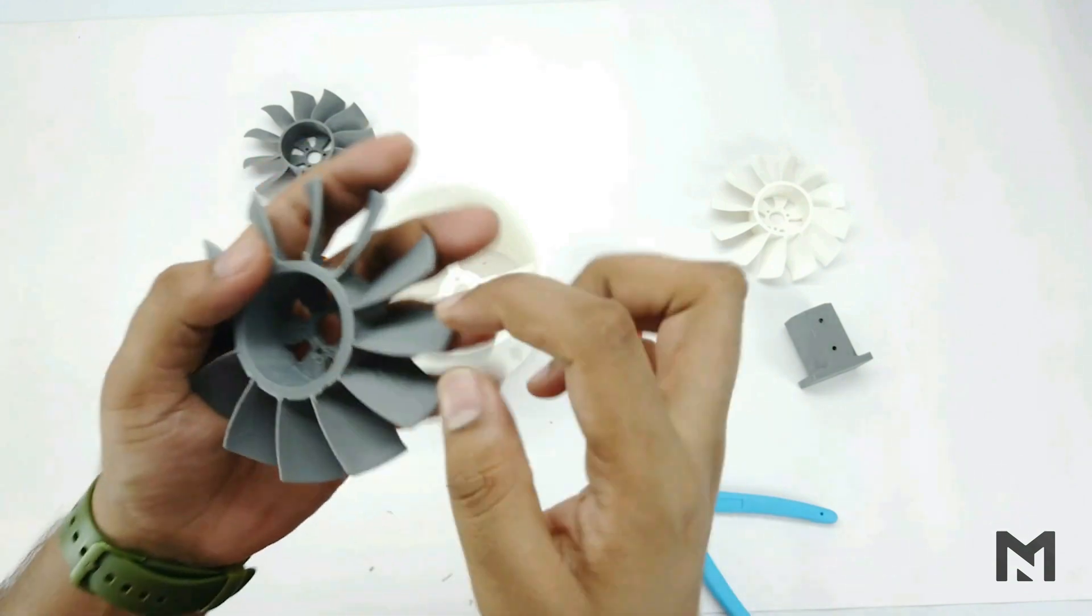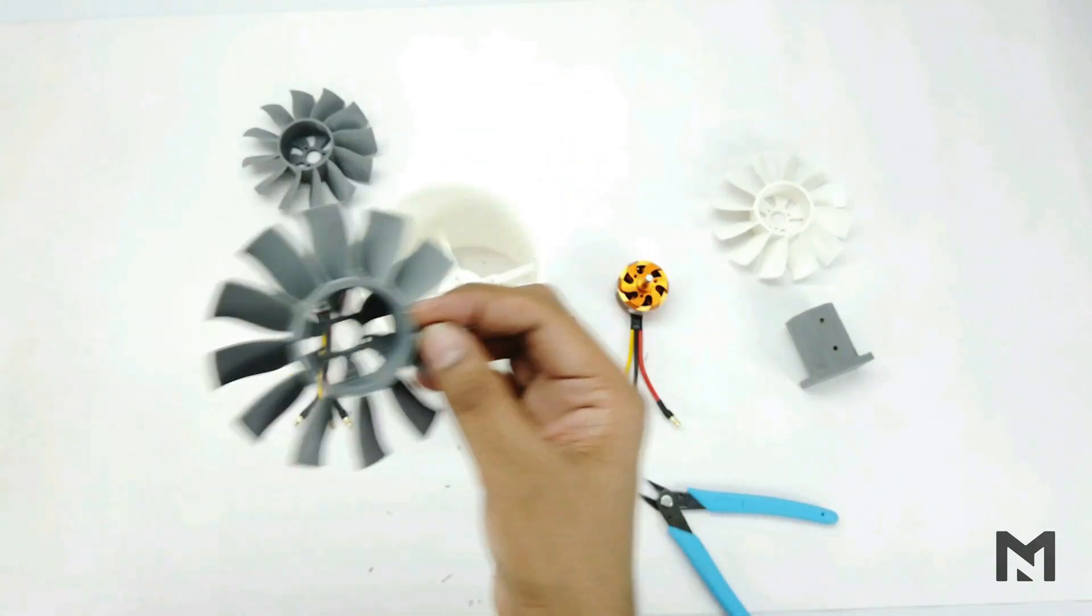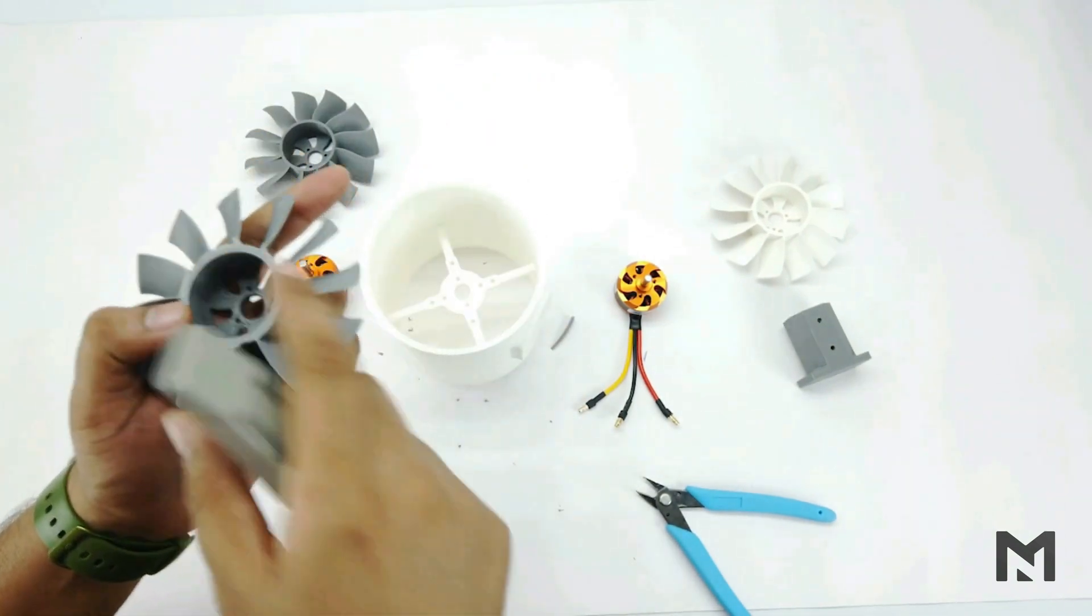These little extrusions you can see is the part of brim. Brim helps in creating adhesion between part and printing surface. Remove these using a cutter.